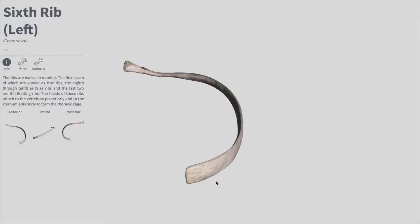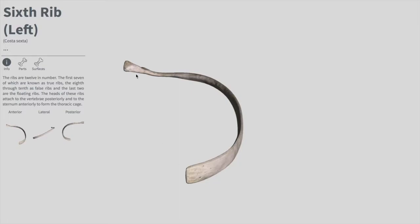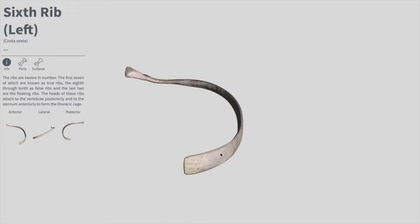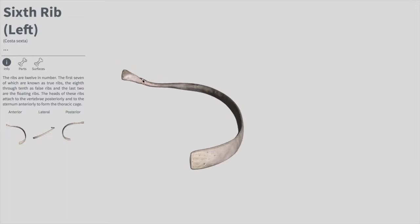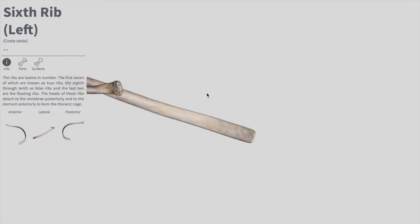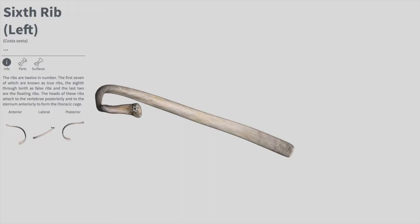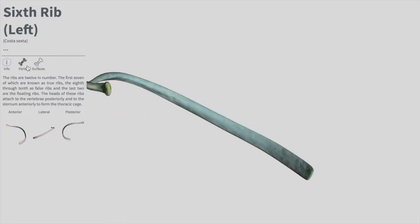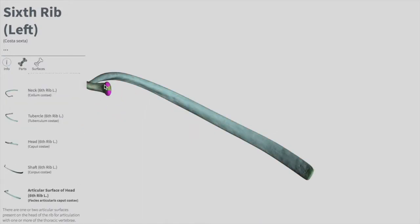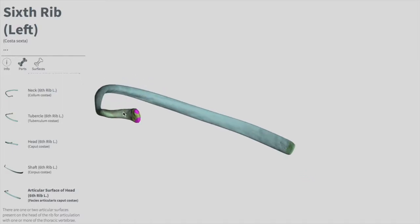Now let's talk about the parts of the rib: head, neck, tubercle, shaft, and angle. The head cannot be found on the anterior side — the costal cartilage attaches there. The head is on the posterior side where it articulates with the vertebrae. The head has two facets for articulation with the corresponding thoracic vertebra and the one above it.